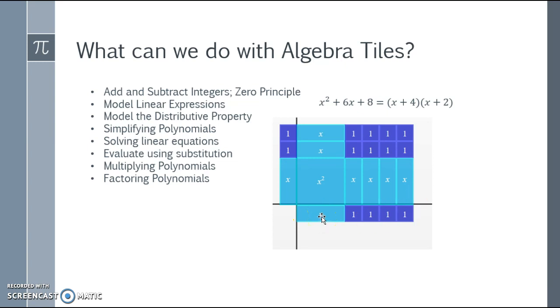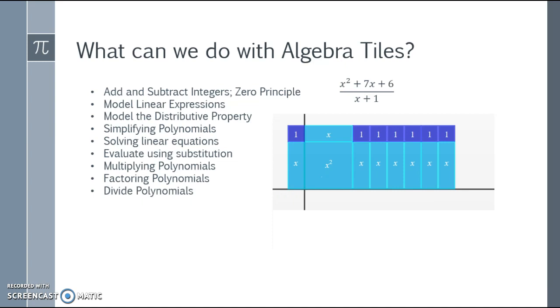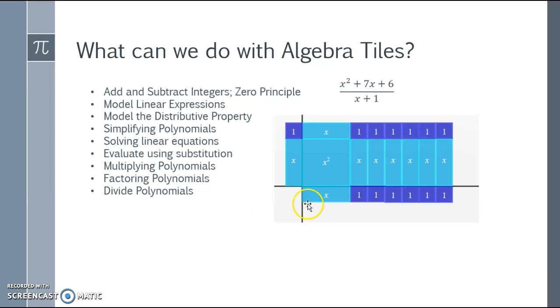We can also divide polynomials. Let's say I have x squared plus seven x plus six, and I want to divide by x plus one. What would our other factor have to be down here? I can see that this dimension would be x, and each one of these x tiles would have a dimension of one, so x plus one, two, three, four, five, six—x plus six would be the result of x squared plus seven x plus six divided by x plus one.